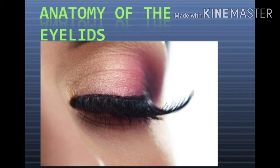The function of the eyelids is to protect the eyeball from direct and bright sunlight and also from injury. The upper eyelid is larger and more mobile than the lower eyelid. The eyelids are separated from the eyeball by the conjunctival sac.